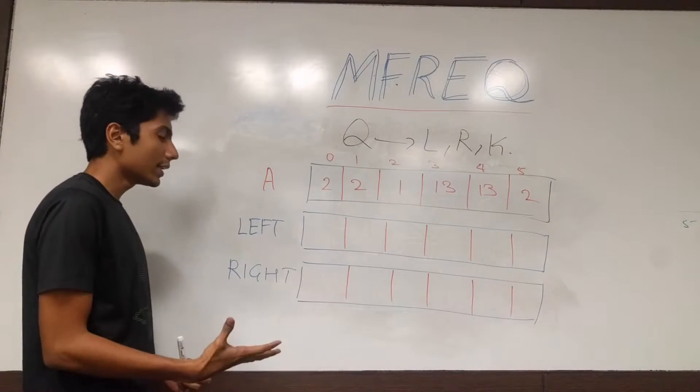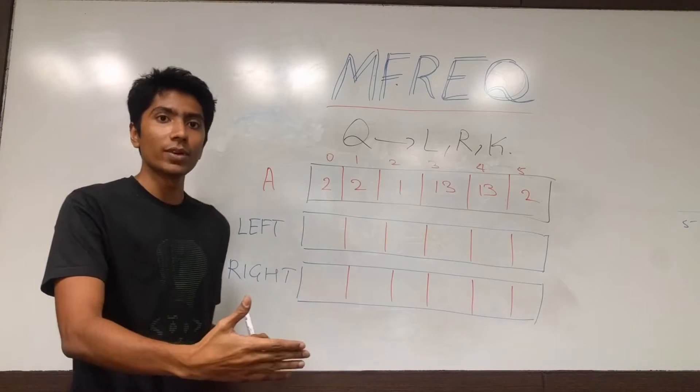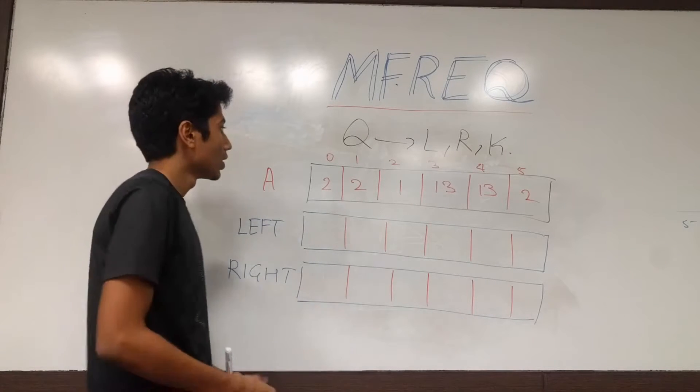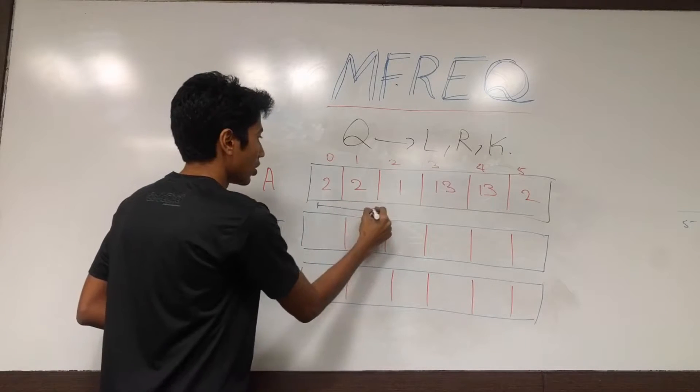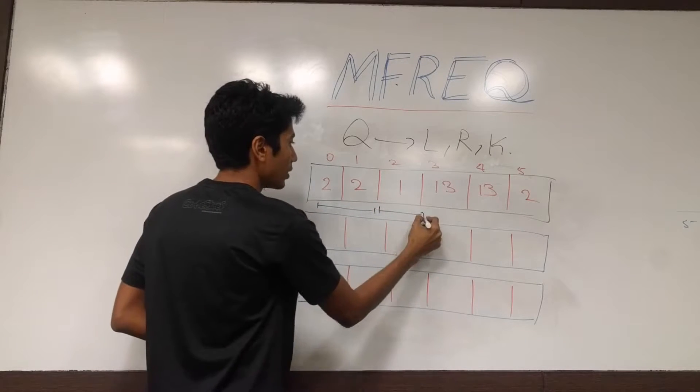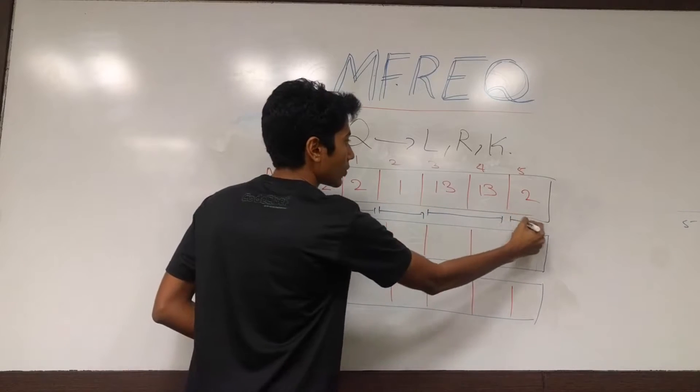So a run is nothing but a contiguous set of elements of the same type. So 2 starts over here, there's a run of 2 and 2, there's a run of 1, there's a run of 13 and 13, and there's a single run of 2.